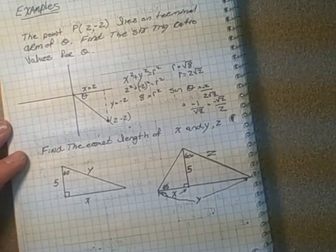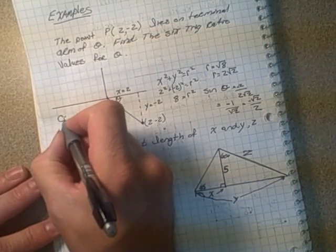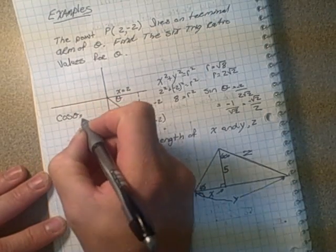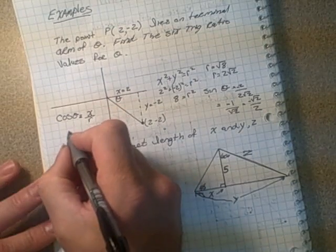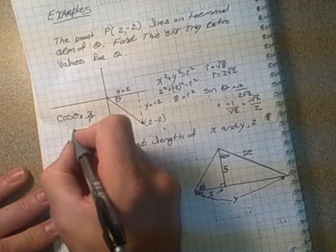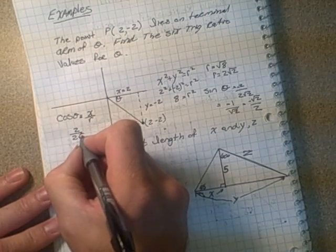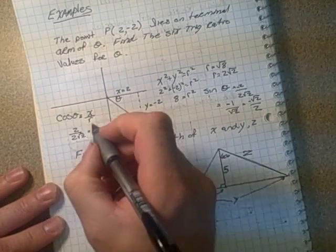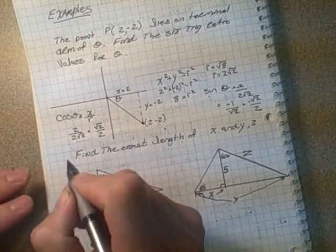We can do the same for cosine. So cosine theta, that's x over r. And here we can see that it's going to be the similar thing, 2 over 2 root 2. So we're going to end up getting root 2 over 2, and it's positive.